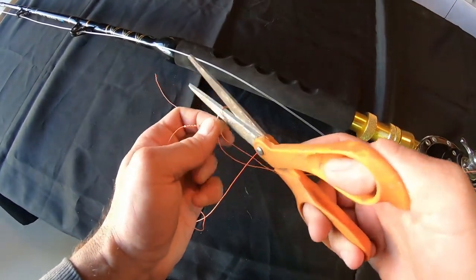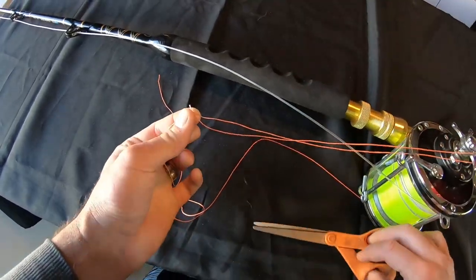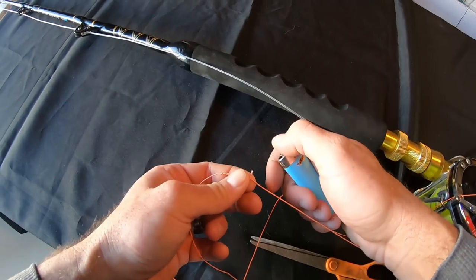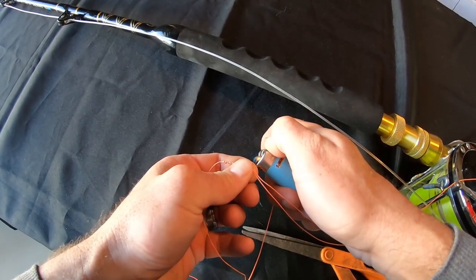Now we can just trim off the tag ends and then just with the lighter burn the end to stop it from fraying.